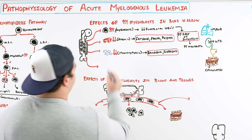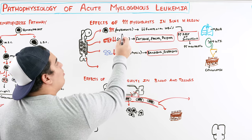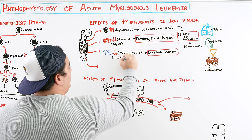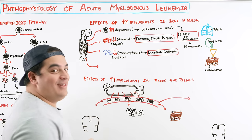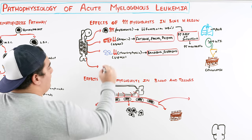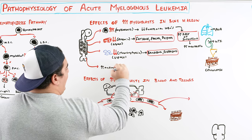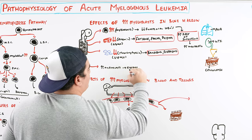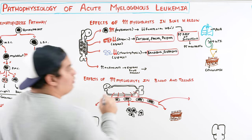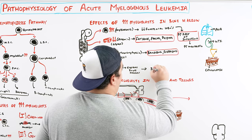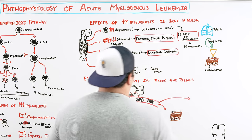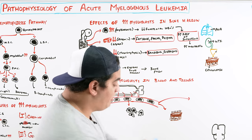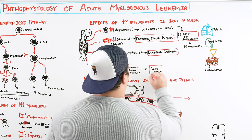Because the myeloblasts are crowding out so much space, they actually cause expansion of the bone marrow. When the bone marrow expands, it activates many nerves innervating the bone marrow, which can precipitate bone pain. This can present as back pain, chest pain, or the patient may present limping. Watch out for this as another potential feature.